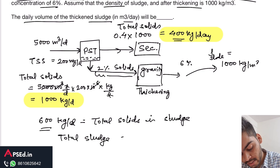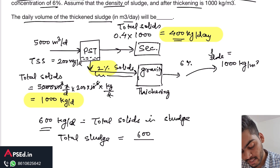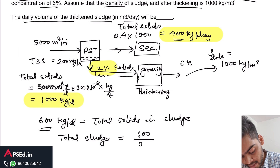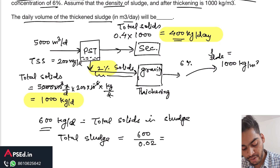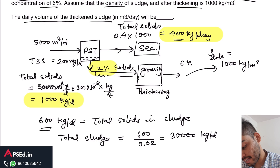The sludge also contains water, so we need to find the total sludge mass. Since the sludge has 2% solids, total sludge mass = solids mass / solids fraction = 600 / 0.02 = 30,000 kg per day. This is the total sludge mass before gravity thickening.